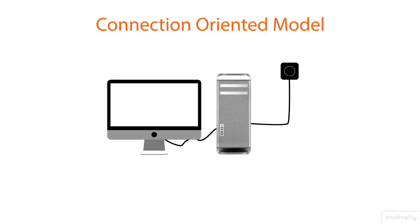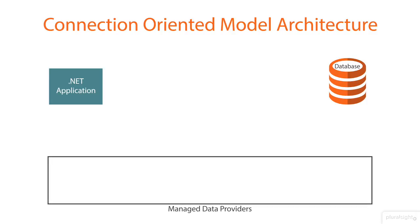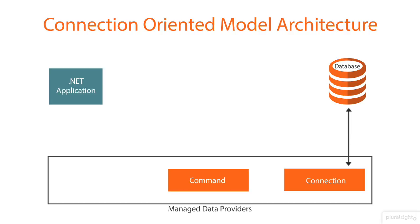Now let us try to understand connection oriented model architecture. Say we have an application and it has to interact with the database using connection oriented model. Then we have been provided with managed data providers. We use connection to establish the physical connectivity with the database. The command object will use connection to interact with the database and it can interact with the application for executing the commands.